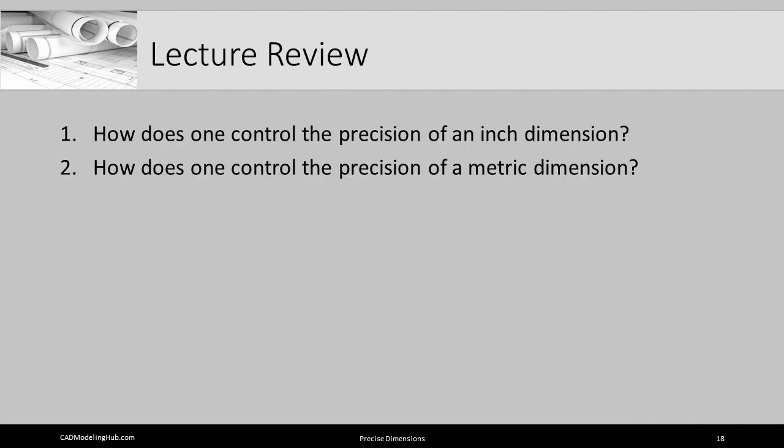So that concludes our discussion on precision. We'll talk more about tolerancing and more about precision, but every dimension has to be specified as to how precise to actually make it, since we can't manufacture anything perfectly. As we conclude this lecture, let's talk for just a minute about how does one control the precision of an inch dimension. One controls the precision of an inch dimension by specifying an appropriate tolerance for each dimension. Length or location does not matter. It just needs to make sure that there is a tolerance, an appropriate, precise tolerance covering each dimension.